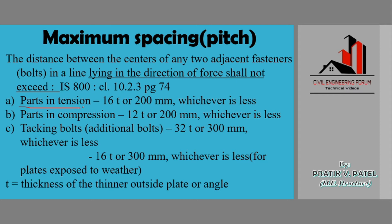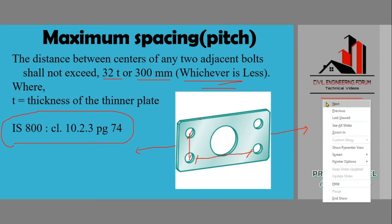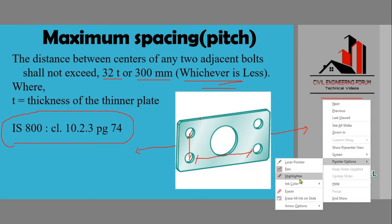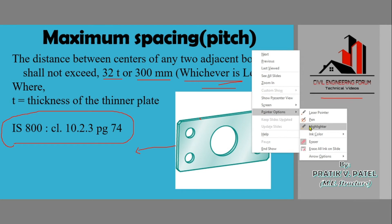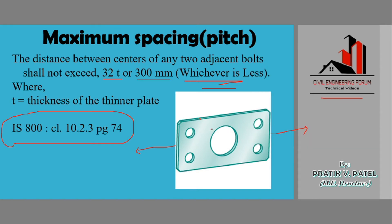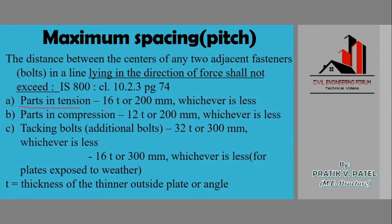For parts in tension, the criteria given is 16 times the thickness or 200 mm, whichever is less — this is the maximum spacing or pitch distance for tension members.